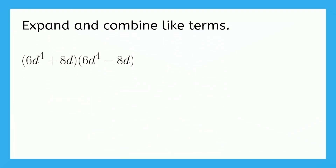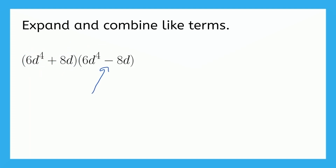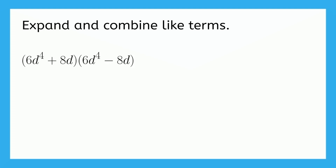Our instructions are to expand and combine like terms, so we don't need to do this the long way because we already know the shortcut. Our answer is going to be the first term squared minus the second term squared, because the two binomials are the same — the only difference is the sign in the middle. Here, 6d to the fourth corresponds to a and 8d corresponds to b. So our final answer is going to be 6d to the fourth squared minus 8d squared. Now we just need to simplify.